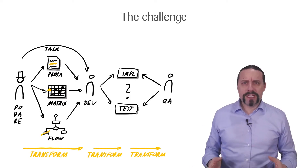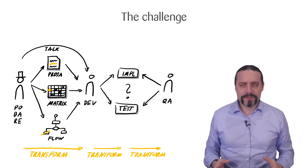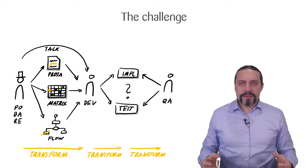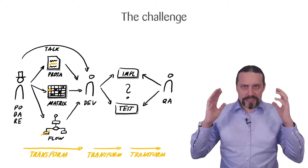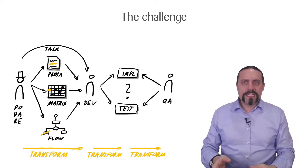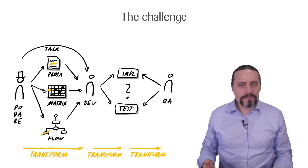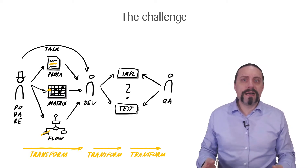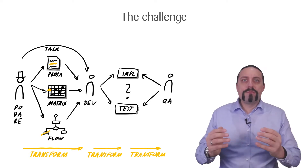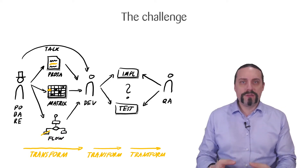What kind of challenge do we have and what problem do we want to solve with BDD? When we look at the PO, the BA, and the UX, they have the specification in their head. They are trying to move that specification into a Word document, into an Excel matrix, or into a nice-looking flow diagram, and then they are throwing this specification over the wall of confusion to the developer.